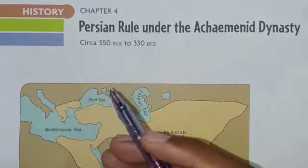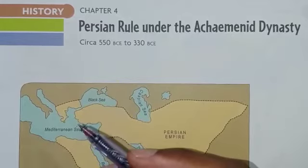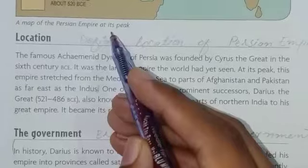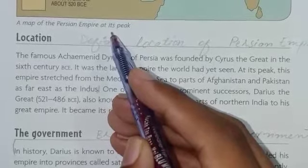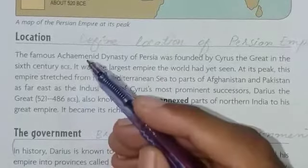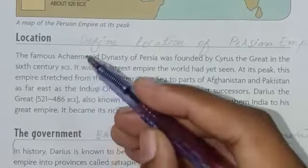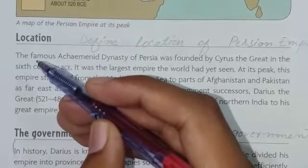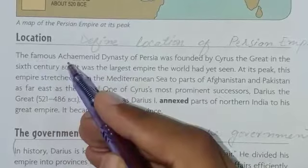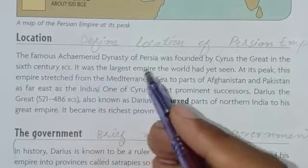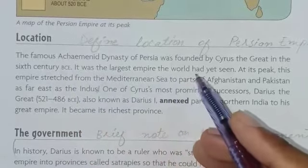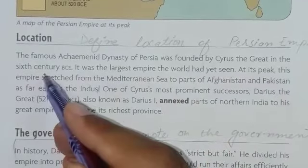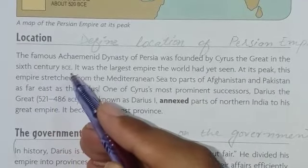Now I'll tell you the location of the Achaemenid dynasty. In this topic we will read the location of the Persian empire. Now I'm going to read this topic from the book. The famous Achaemenid dynasty of Persia was founded by Cyrus the Great in the 6th century B.C.